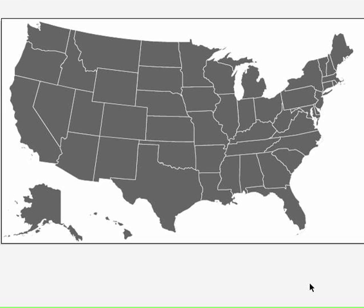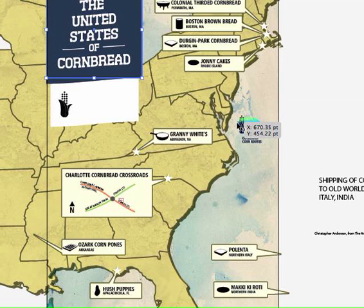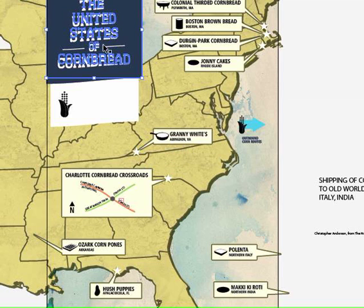But what you can do, like we did in the United States of Cornbread, is we added a texture to the actual map to make it look sort of like cornbread. And then in the background, instead of the typical ocean, I used a texture that has a nice sort of washiness with watercolor.